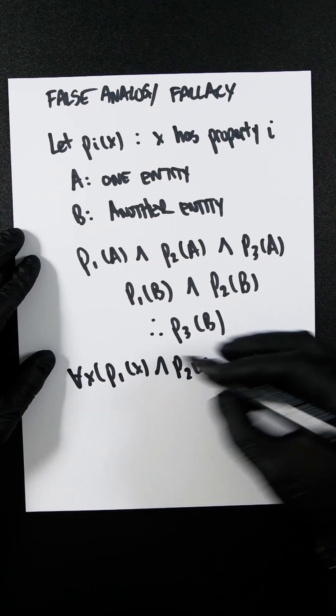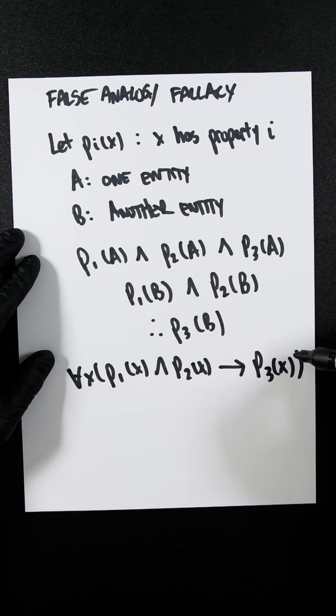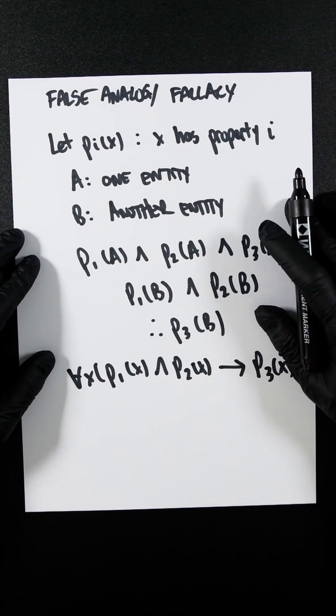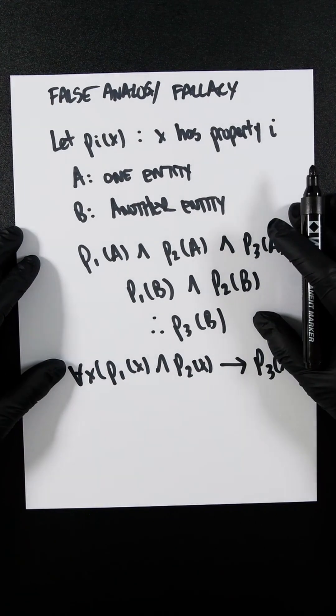So this is if P1(X) and P2(X), then P3(X). That is the false analogy fallacy in predicate logic.